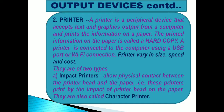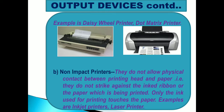A Printer is a peripheral device that accepts text and graphic output from a computer and prints the information on paper. The printed information on paper is called a hard copy. A printer is connected to a computer using a USB port or Wi-Fi connection. There are two types: Impact printers, which allow physical contact between the printer head and the paper. Examples are Daisy wheel printer and Dot matrix printer, which generally create a lot of sound when printing.